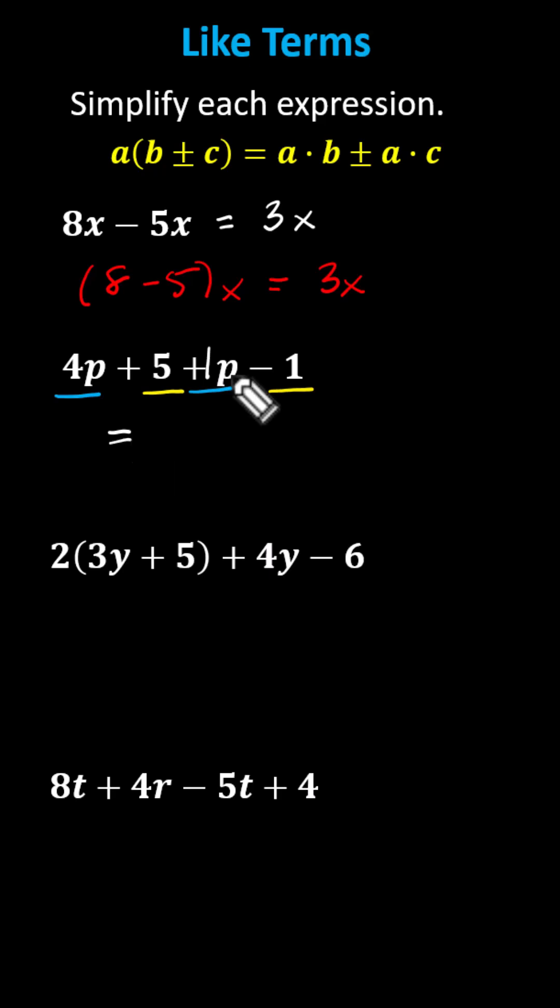Combining like terms to simplify, 4p plus 1p equals 5p, since 4 plus 1 is 5, and 5 minus 1 is 4, giving us plus 4.